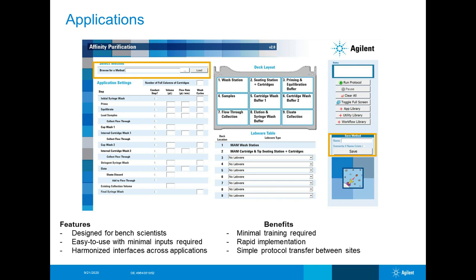We also have a Peltier on the deck. For in-solution digestion we want to keep our reagents at a certain temperature, so we use the Peltier for in-solution digestion, on-cartridge reactions, and glycoprep glycan protocols. There are a lot of different deck components that enable all the different workflows. It's very easy for a bench scientist to pick it up and go right into working on the AssayMap Bravo.